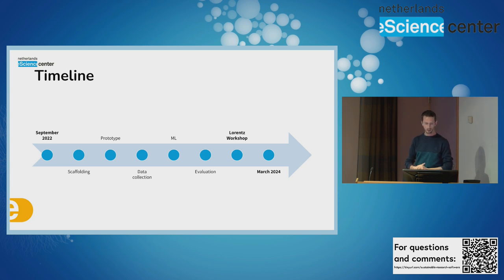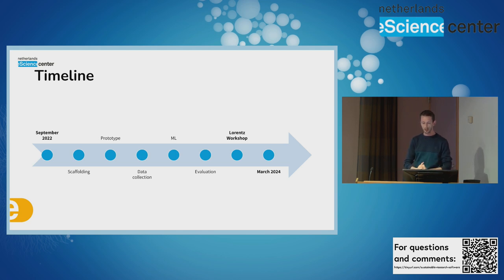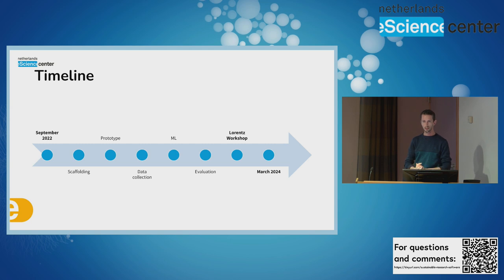The timeline — I'll quickly skip over this. We just started. It will run until the first quarter of 2024 approximately. Towards the end there will be a Lorentz workshop that we will be organizing on this. At that point we will also try to gather the community to think about how we can bring this forward and keep supporting the software. But during this entire timeline, I would be very interested to learn from your experience, because this is a problem that I think many more people have. Any input you have until then would be very much appreciated.